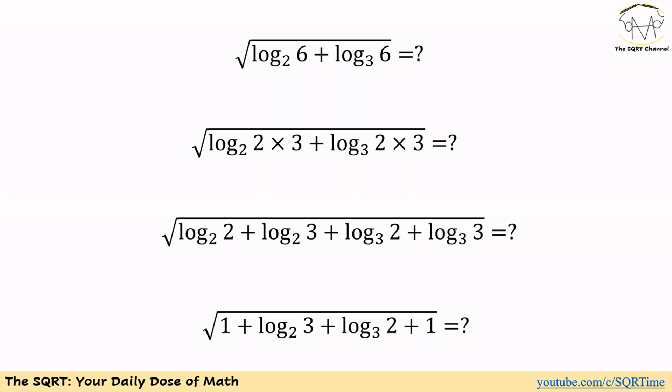Obviously log of 2 in base 2 and log of 3 in base 3 are going to be 1. So at the end we have radical 1 plus log of 3 in base 2 plus log of 2 in base 3 plus 1.